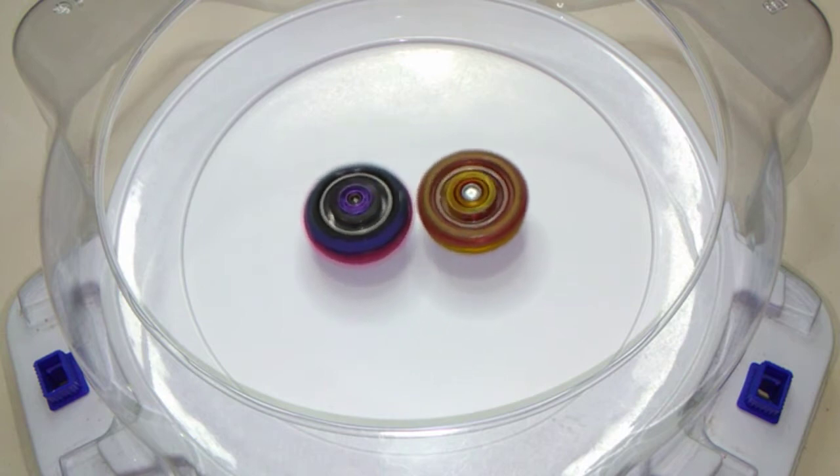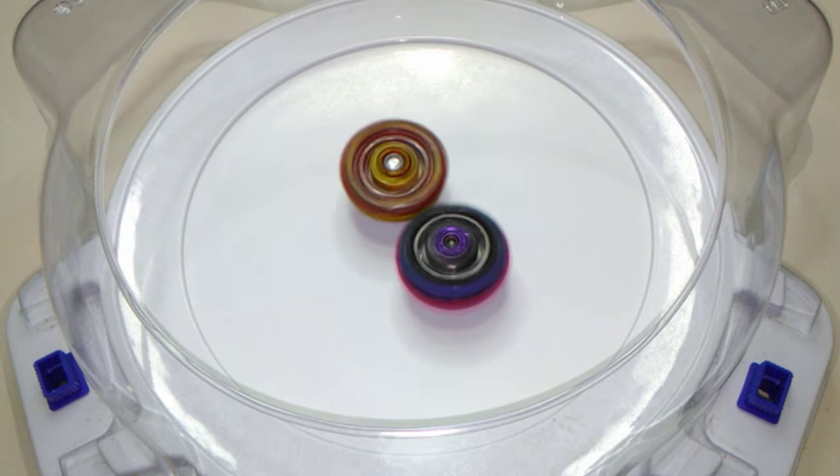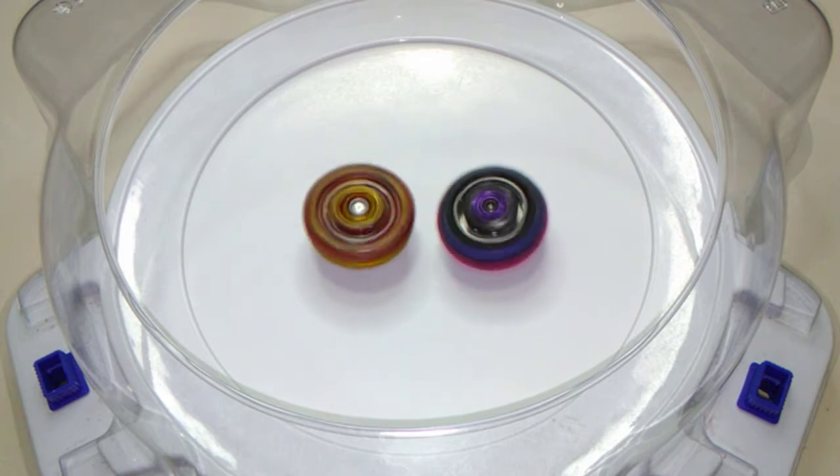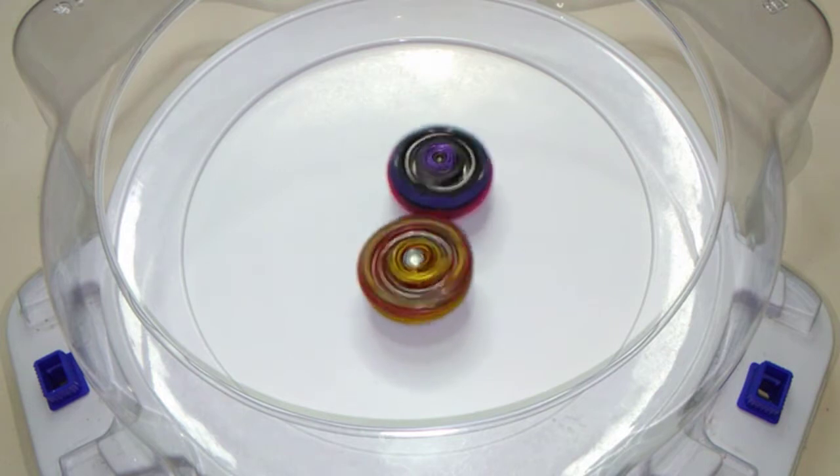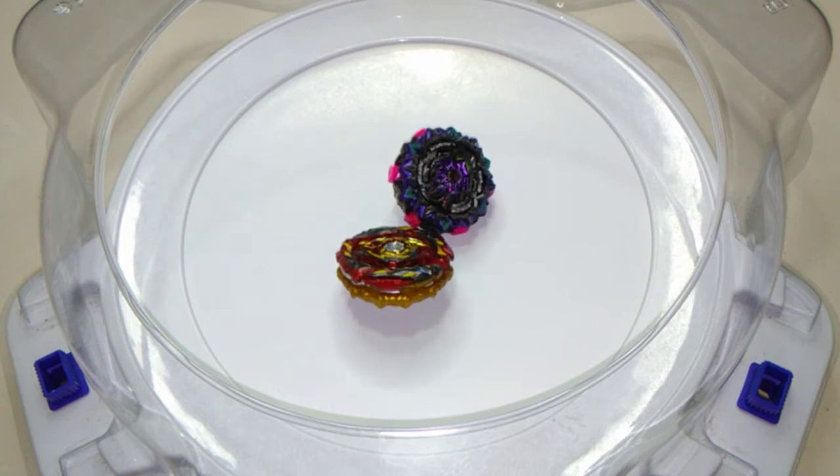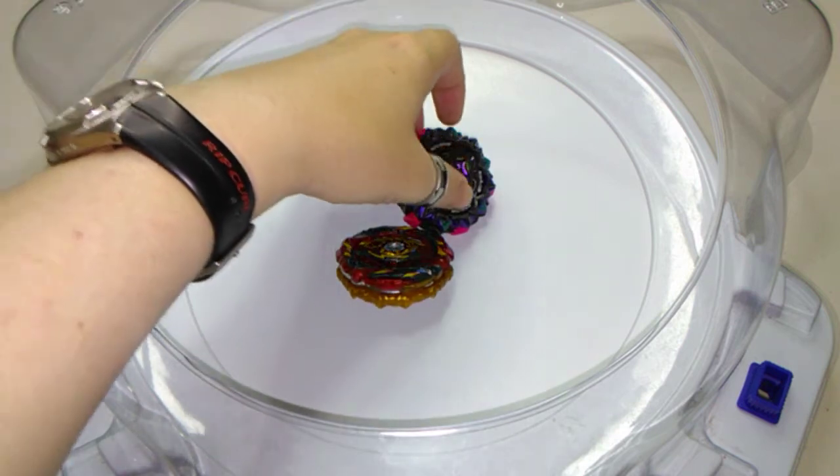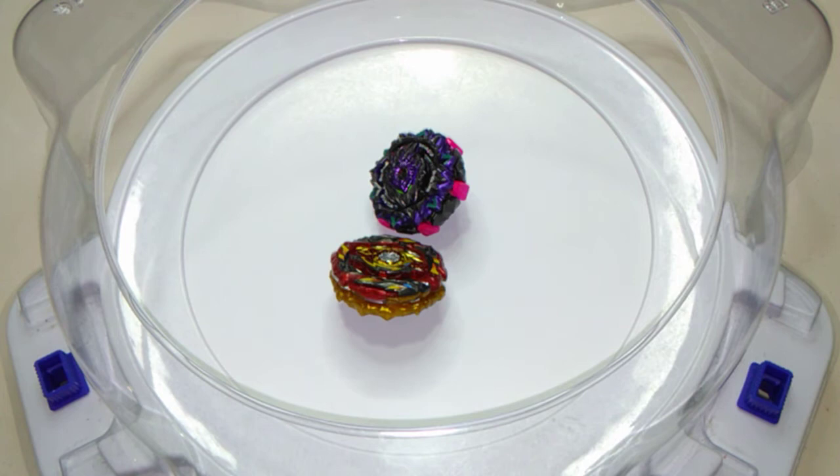Nice contact, World Spriggan all over Variant Lucifer just then. But unfortunately looks like Variant Lucifer just has the weight advantage at the moment, able to keep World Spriggan from taking center completely and stopping him from running on the very tip of his driver there. So that reduces his stamina and as you can see the results seem to be Variant Lucifer able to take a spin finish pretty easily.